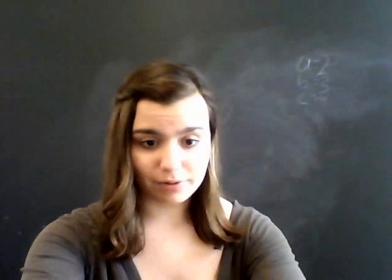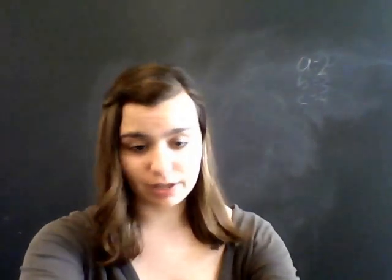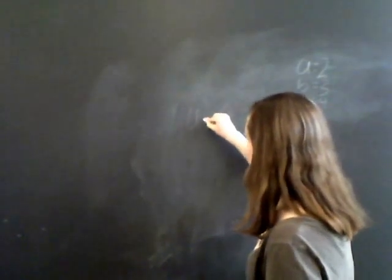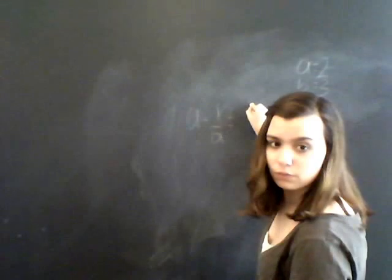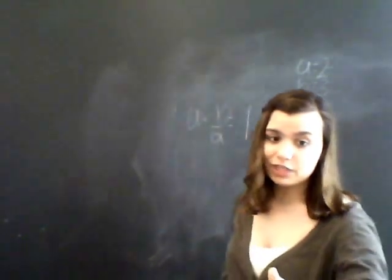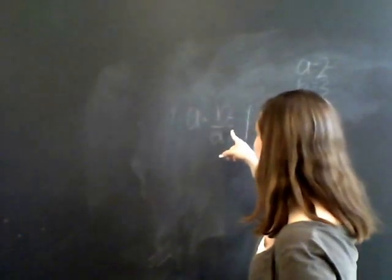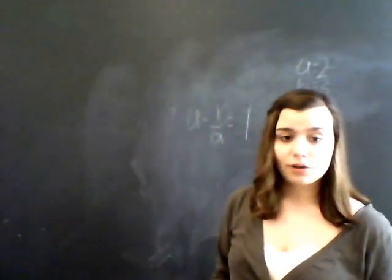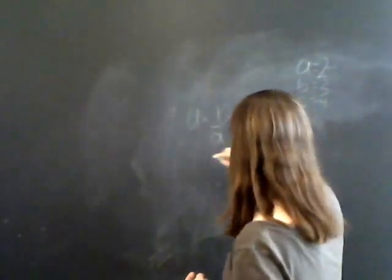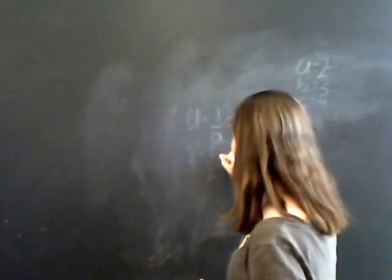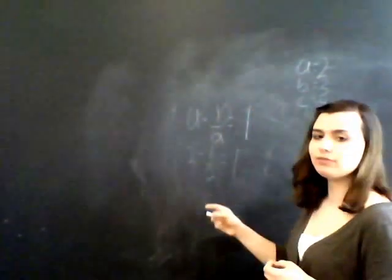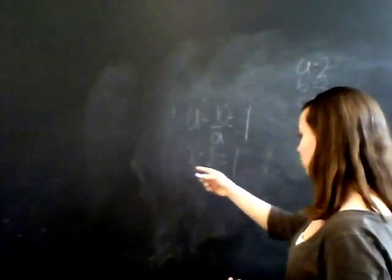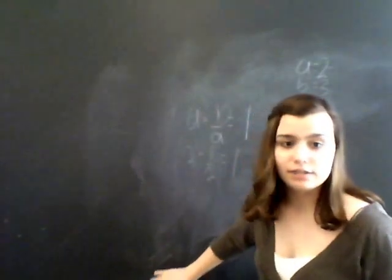The multiplicative inverse property states that a times 1 over a equals 1. Please keep in mind that a cannot equal 0, because if a equals 0 then this would be an undefined fraction — you can't have 0 as the denominator of a fraction because there's no way to divide by 0. So if a equals 2, this is 2 times one-half equals 1 — and 2 halves equal 1 whole. It works with anything: 3 times one-third, 3 thirds is 1; 4 fourths is 1. That is the multiplicative inverse property.